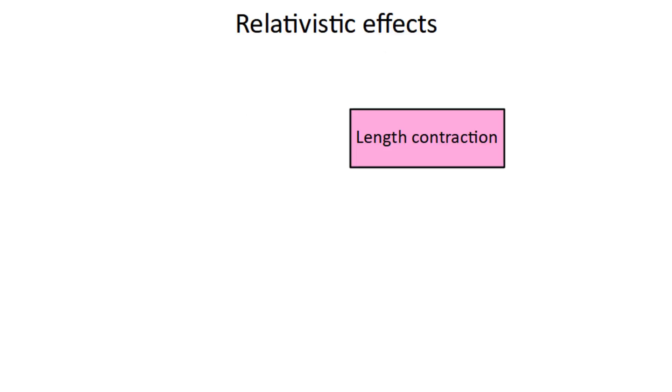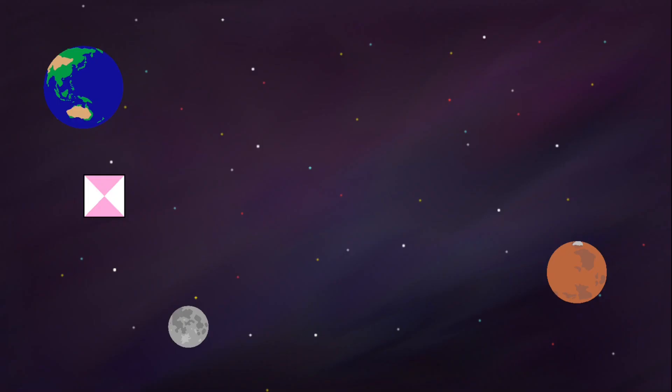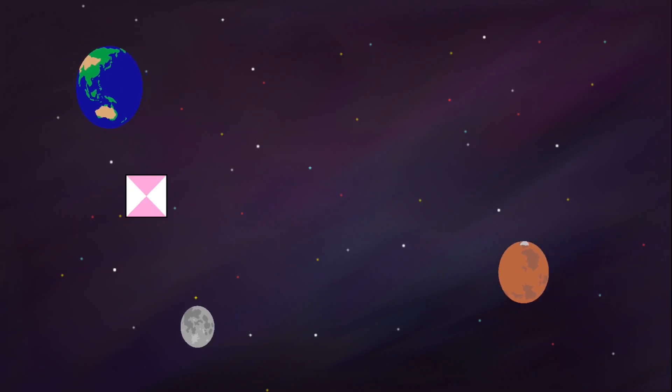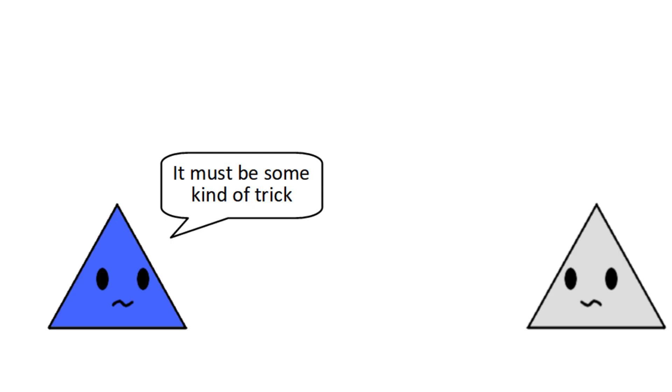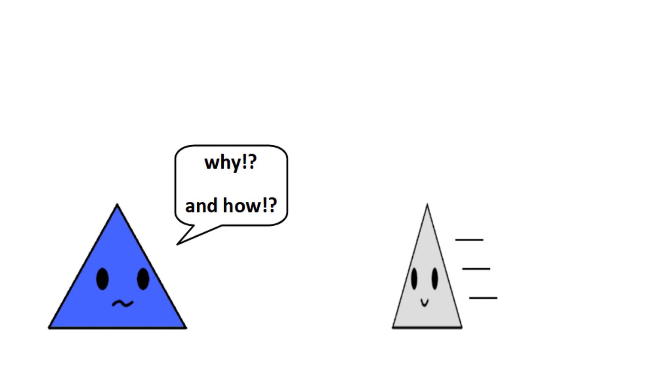So length contraction is one of the most famous relativistic effects, right up there with time dilation. To put it simply, as an object moves faster, its length is shortened or contracted along the direction of motion. And if you switch over to that object's reference frame, then it's everything else that's contracted, and this includes not only objects themselves, but also the empty space between them. Similar to time dilation, you might hear this and think it must be some kind of illusion, but no, the object literally does get shorter. So that raises the question, why does this happen and how does this happen?